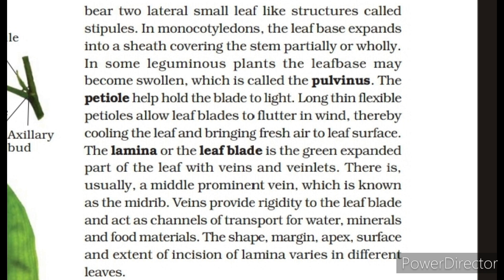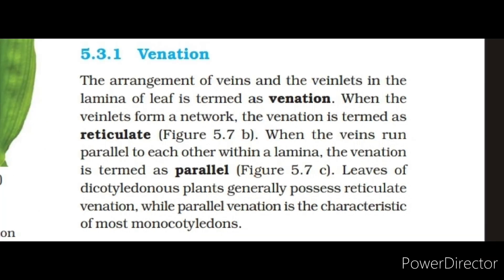The lamina or the leaf blade is the green expanded part of the leaf with veins and veinlets. There is usually a middle prominent vein which is known as the midrib. Veins provide rigidity to the leaf blade and act as channels of transport for water, minerals and food materials. The shape, margin, apex, surface and extent of incision of the lamina varies in different leaves. Venation is the arrangement of veins and veinlets in the lamina. When the veinlets form a network, the venation is termed reticulate. When the veins run parallel to each other within a lamina, the venation is termed parallel. Leaves of dicotyledonous plants generally possess reticulate venation while parallel venation is characteristic of most monocotyledons.